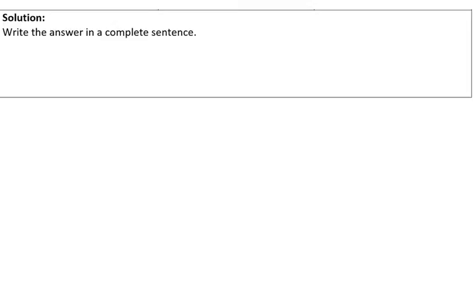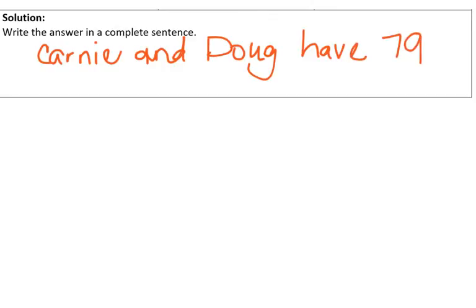So, our answer was 79, but we want to write this in a complete sentence. So, we can say, Carney and Doug have 79 more cookies to sell. Hopefully, your handwriting looks much better than mine on an iPad. We're going to move to the next slide.